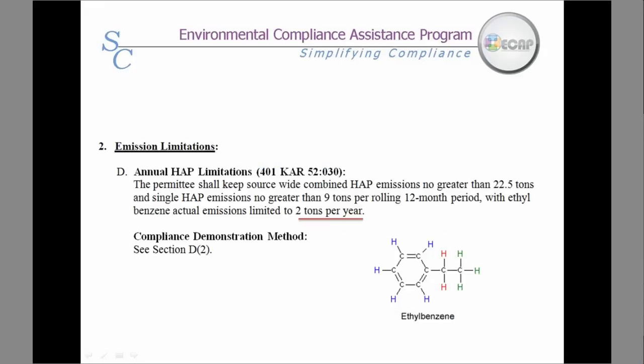Another type of a true emission limit is when a limit is imposed for a particular pollutant. This occurs often when an air toxics assessment indicates that a particular level of a defined pollutant is determined to be hazardous to human health or the environment when above a certain level. For example, this conditional major permit requires rolling totals of HAP and VOC emissions, except the air toxics assessment indicates the facility cannot emit more than two tons per year of ethyl benzene.